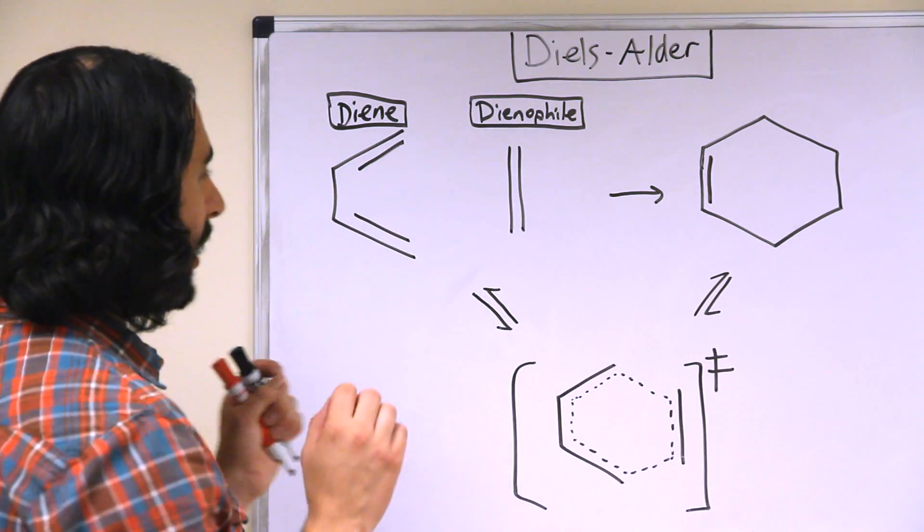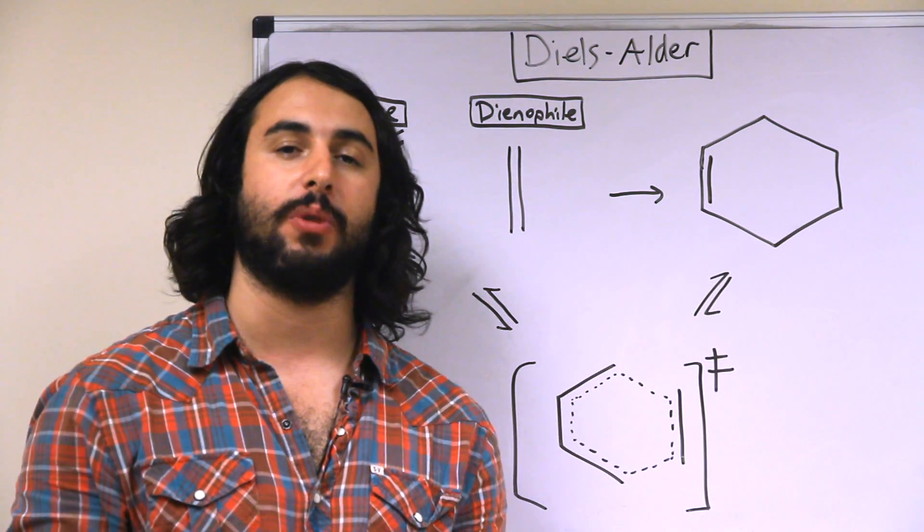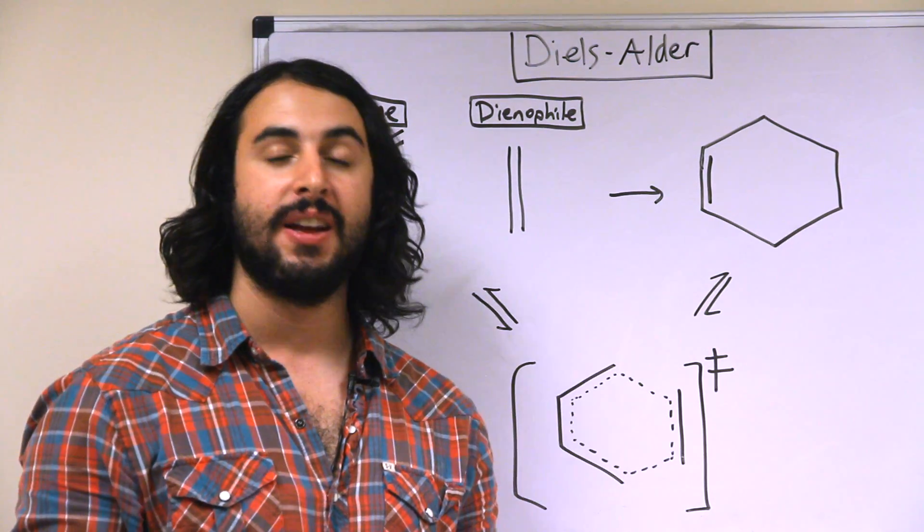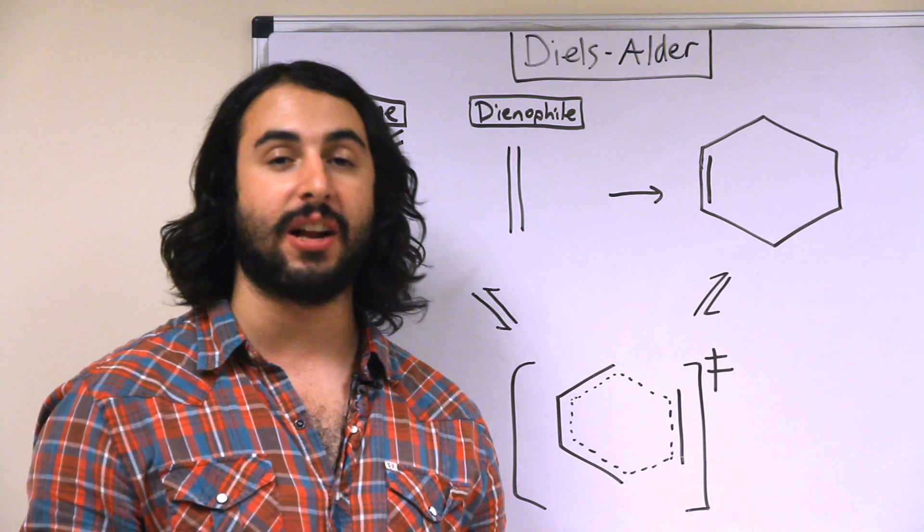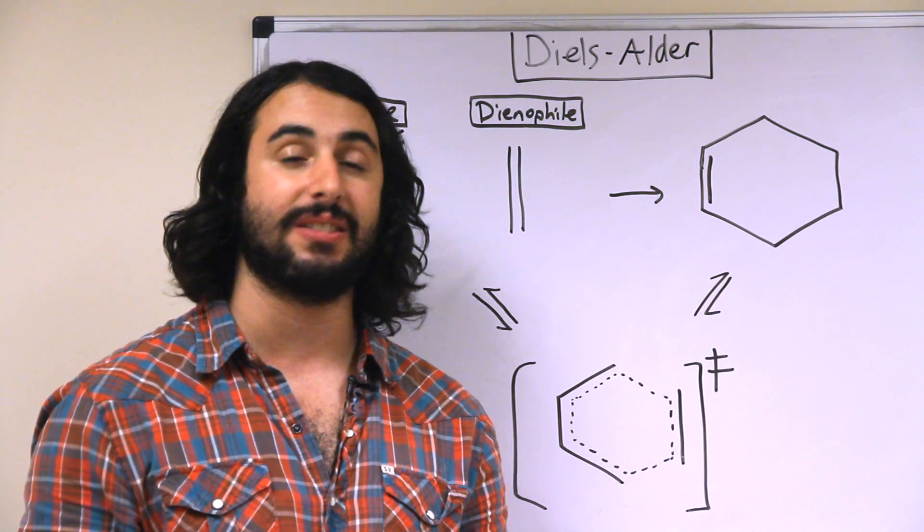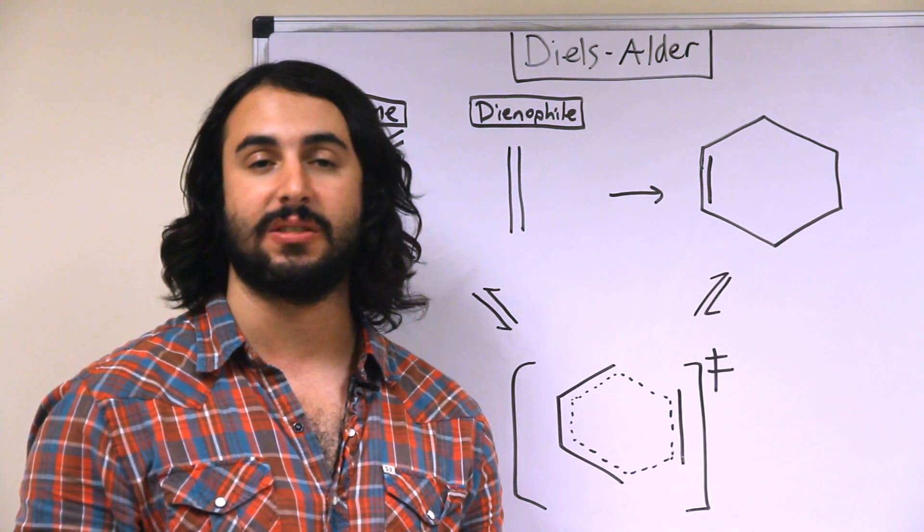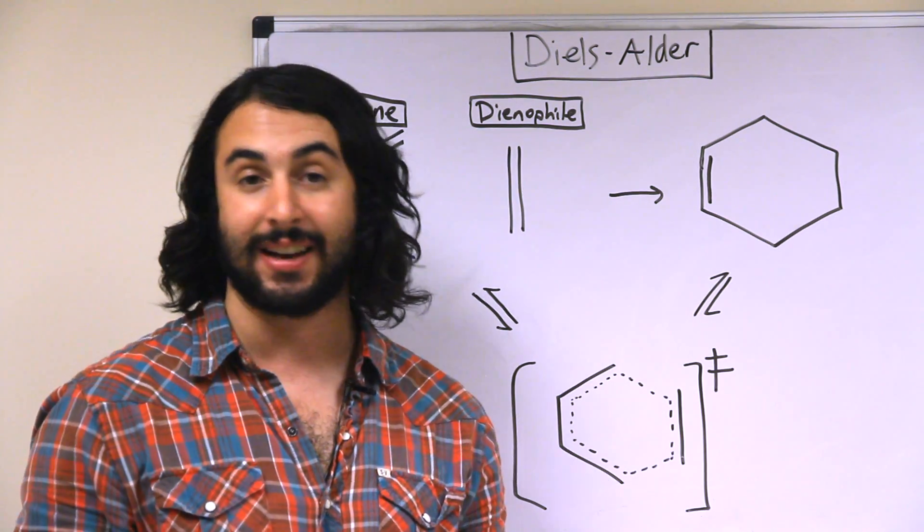What is common of every Diels-Alder reaction is that we're going to be forming a six-membered ring. This is very useful in synthetic chemistry because there are a lot of naturally occurring compounds that we wish to synthesize that have six-membered rings. This is a very stable ring and is utilized a lot in nature.